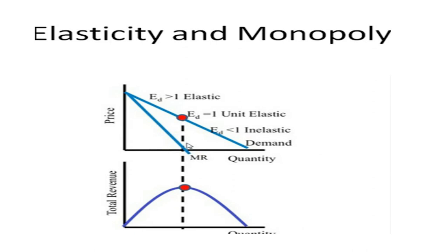At this point, marginal revenue is at its minimum or zero, and total revenue is at its maximum. When elasticity decreases, total revenue also decreases. So there is no profitable situation for the monopolist to produce goods in an inelastic market. It is profitable for the monopolist to produce goods under highly elastic demand.